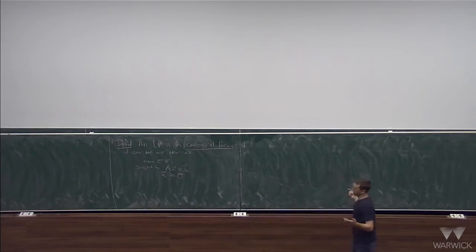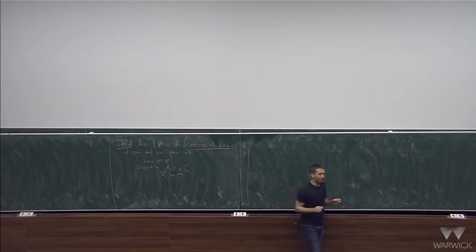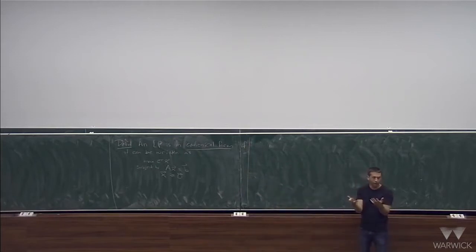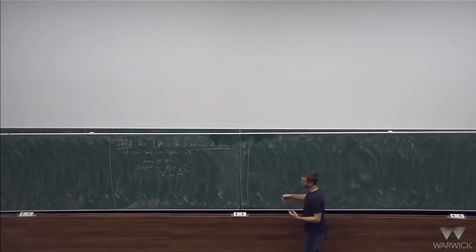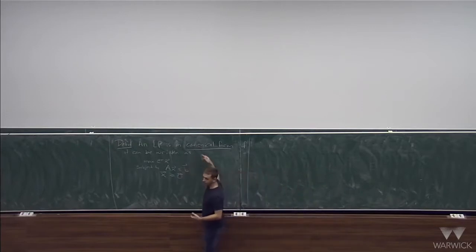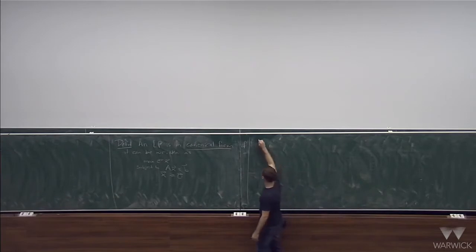So the first kind of question is: this looks like a special type of linear program. But actually, as it turns out, if you have any linear program at all, you can always transform it into a linear program of this type. So basically, if you understood how to solve these types of linear programs, then you can always solve any linear program, because you can first transform it into one that has this structure. Okay, so that's a lemma.